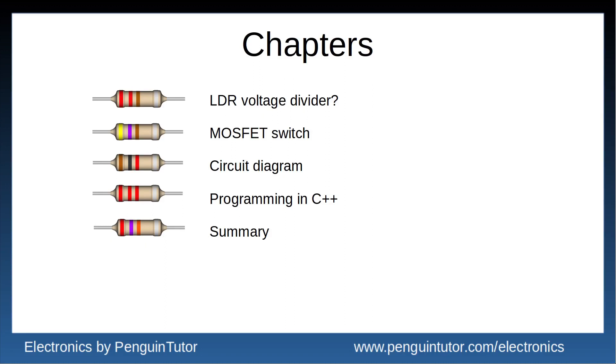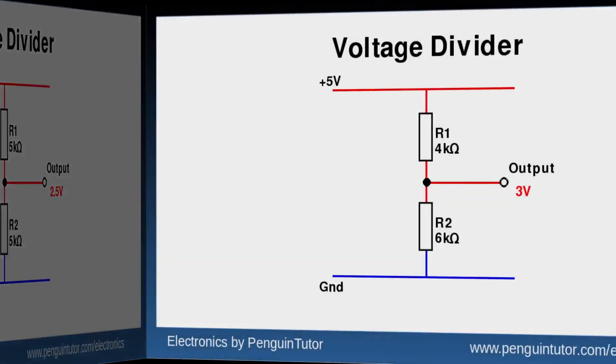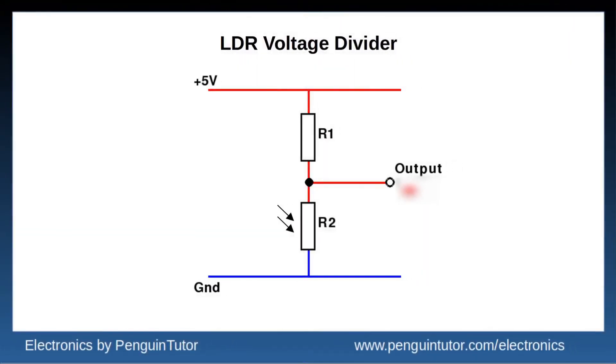As a reminder, this is an example of a voltage divider. The output is proportional to the value of the two resistors. In the example shown, the resistors have the same value, so the output is half of the input. Increasing the value of R2, the bottom resistor compared with R1, will increase the output voltage. If we swap R2 for a light-dependent resistor, otherwise known as an LDR, then we can use this to detect the amount of light hitting the LDR.